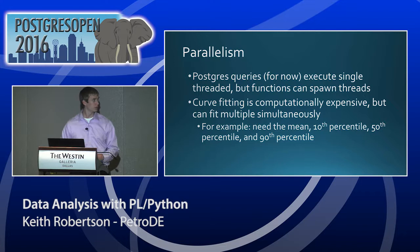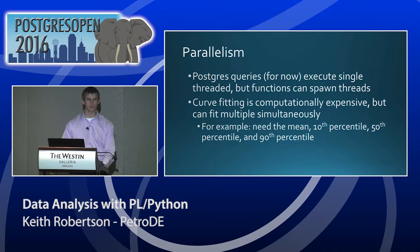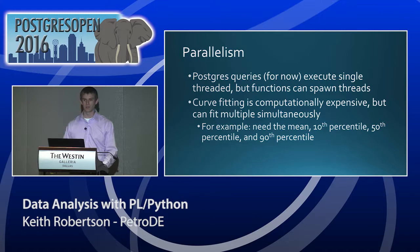PLPython also allows you to achieve parallelism. Just because up until Postgres 9.6 there hasn't been parallelism in queries doesn't mean your functions can't be parallel. Your functions can spawn off processes and do things in multiple threads. The curve fitting I'm doing is computationally expensive, and I generally need to do four of them — 10th percentile, 90th percentile, median, and mean — so I just do all four in parallel. You can even run things on the GPU. There's a lot of flexibility here that you may not initially think of when you're inside a database.